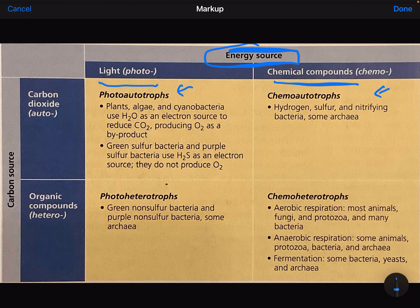Chemoautotrophs would be these organisms that use things like hydrogen and sulfur, in a similar way that plants and photosynthetic bacteria use light.